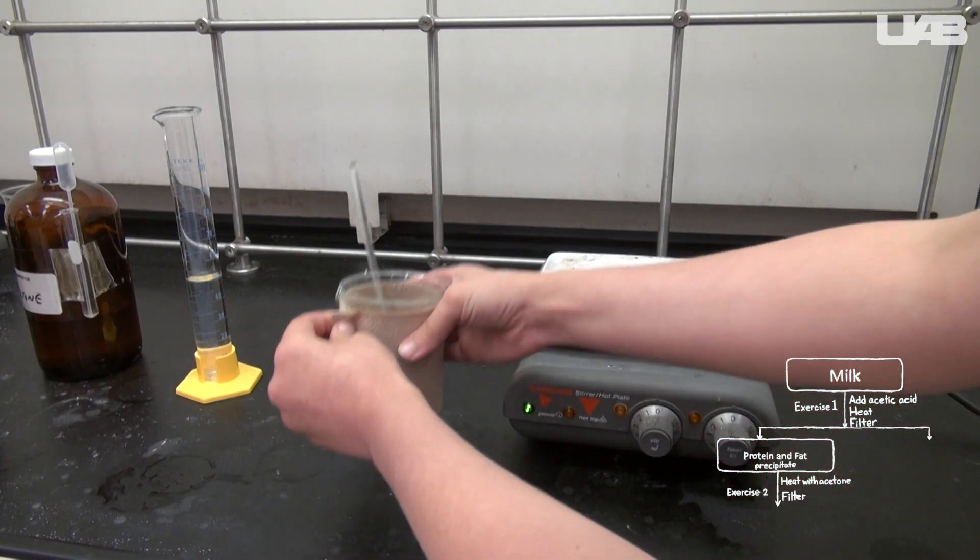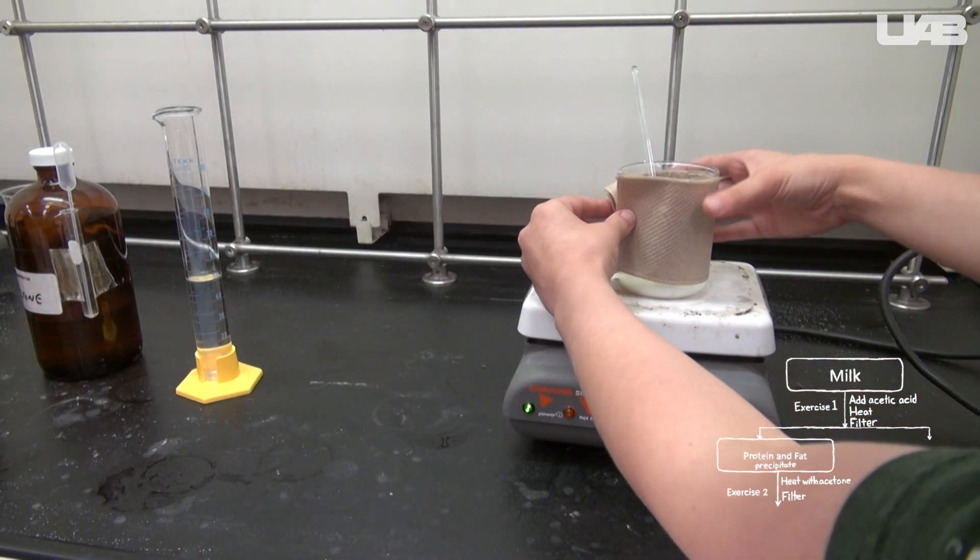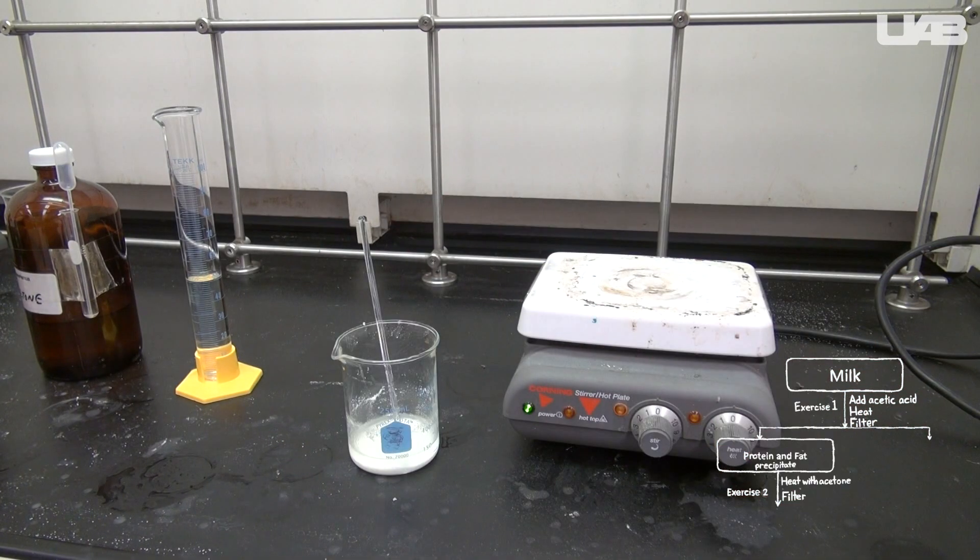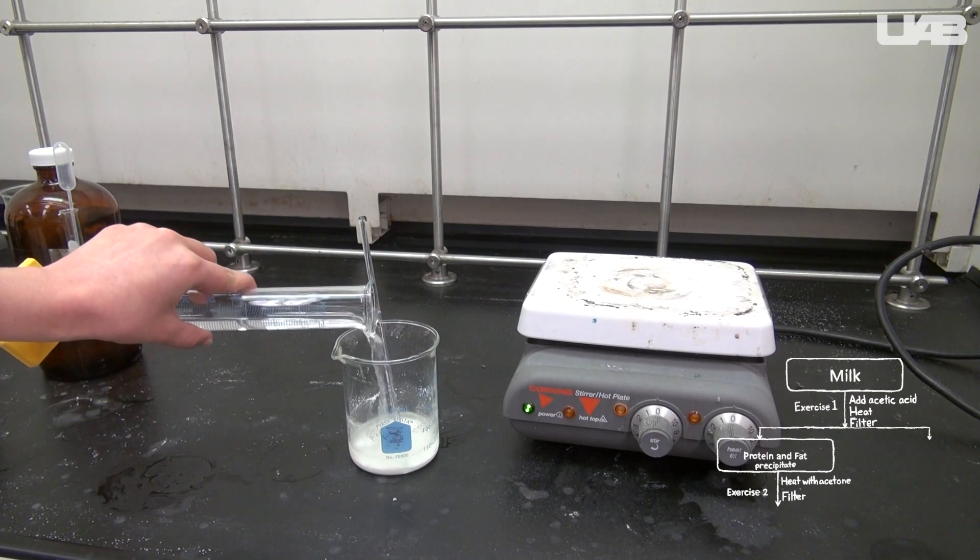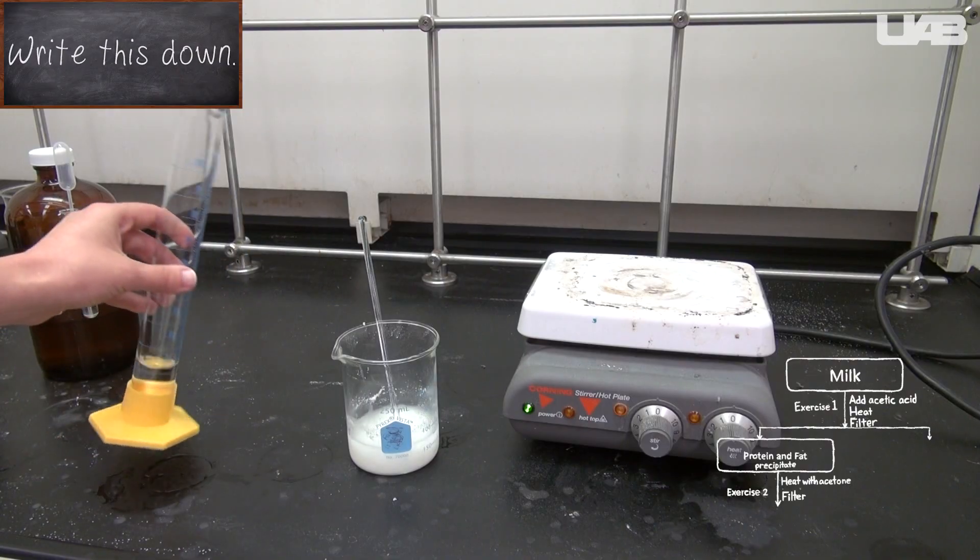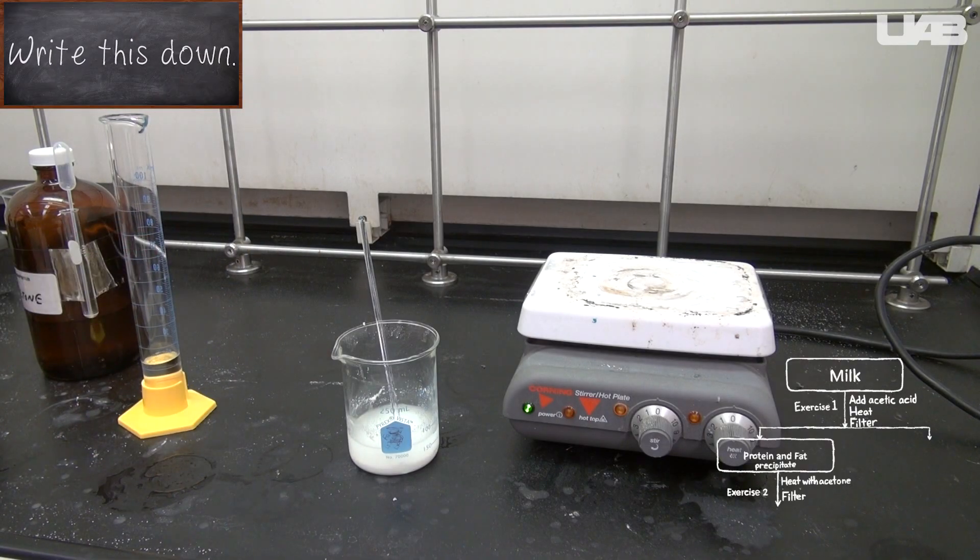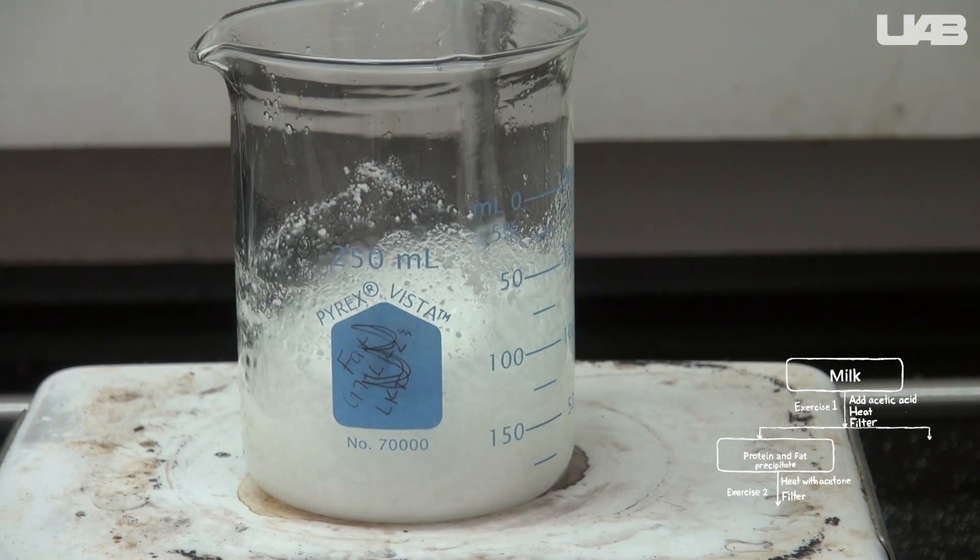Then put it back on the hot plate and let it come to a boil again. You should repeat this for a total of three cycles of boiling and cooling. Some of the acetone will evaporate while you do this, so periodically add more to keep it at its original volume. The fat should now be dissolved.